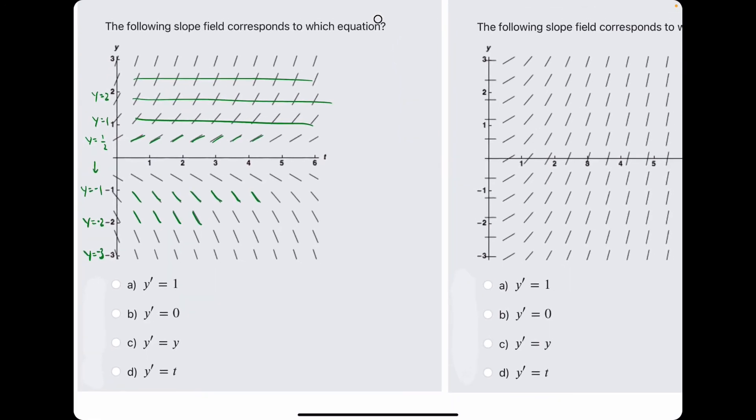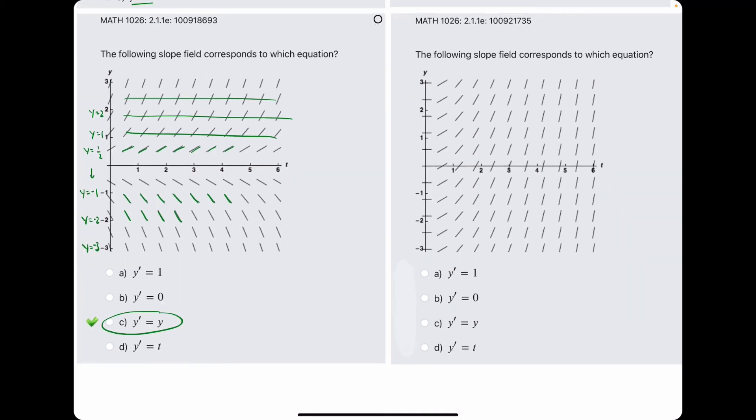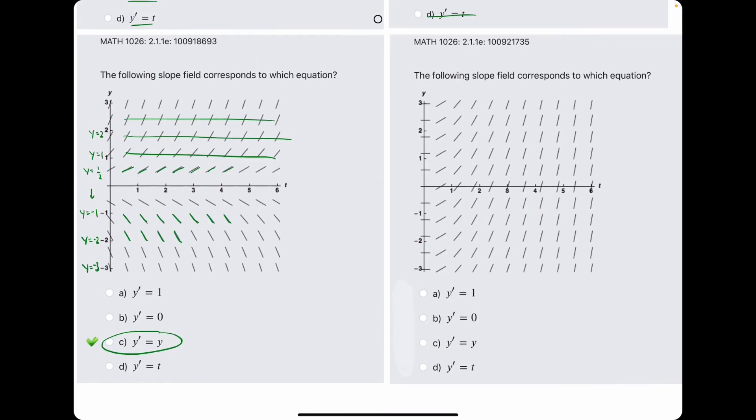And so what this is telling us is that the slope at any one point is solely dependent on the y value and not the t value because it's only when the y values change that the slope values are changing. So in this case, c is what you'd want to look for. You want to say that the slope values are dependent on the y value. So that's why y prime is equal to y.